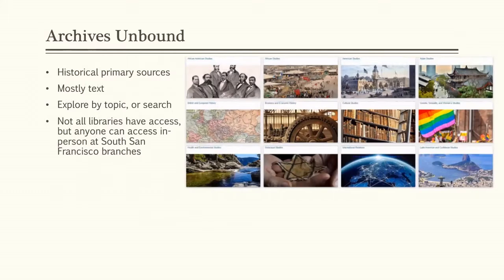Another database is Archives Unbound, which I believe is South San Francisco only. But if you visit our branches in person, you'll be able to access it from our computers or our Internet without a login, because it detects automatically. This is focused on historical primary sources — publications from various activist organizations and similar groups, so you can see what people were talking about at the time. It may not be as useful for specifically South San Francisco if you're trying to look at a narrow topic, but if you want a broader sense of opinion on a certain subject at a point in time, it can be useful.